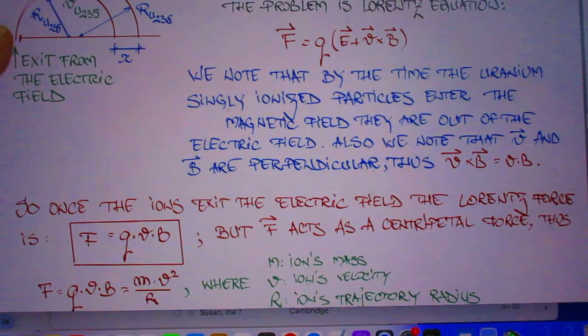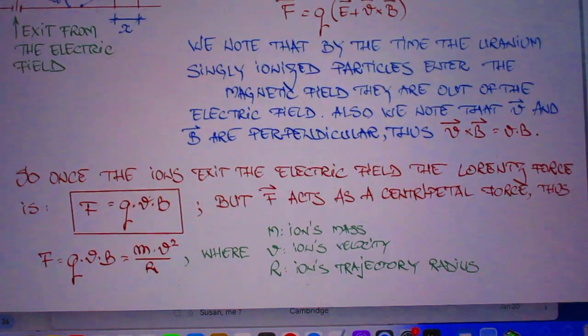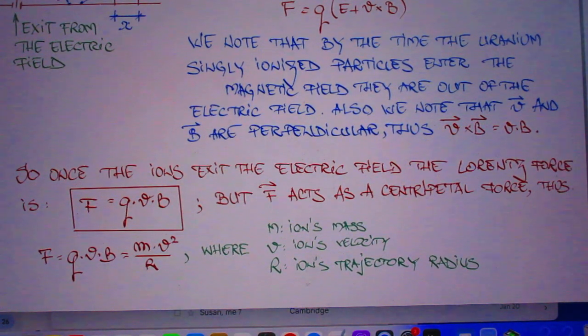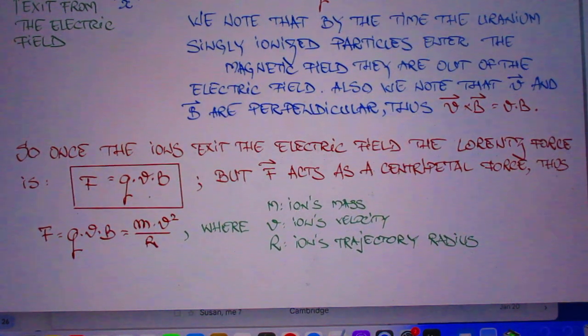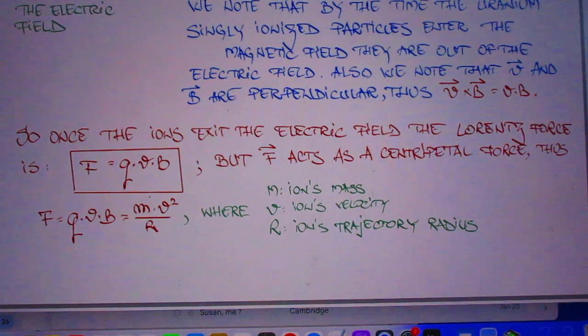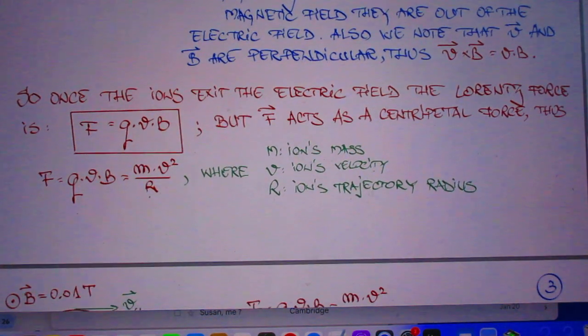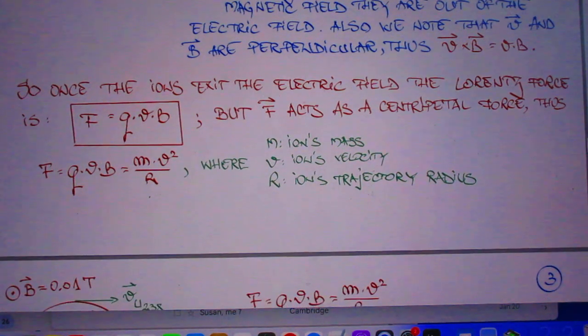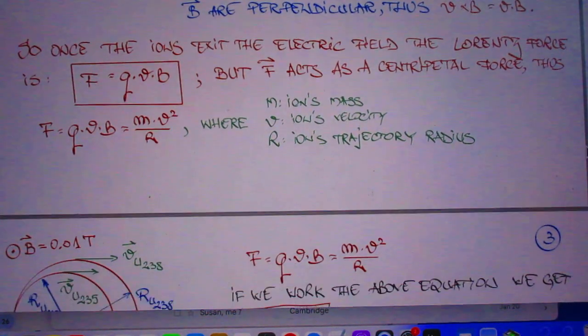So here come the ionized particles in, and that is at the end of that electric field which accelerates them. We note that by the time the uranium singly ionized particles enter the magnetic field, they are out of the electric field. We also note that V and B are perpendicular, so the cross product V cross B is simply V times B.